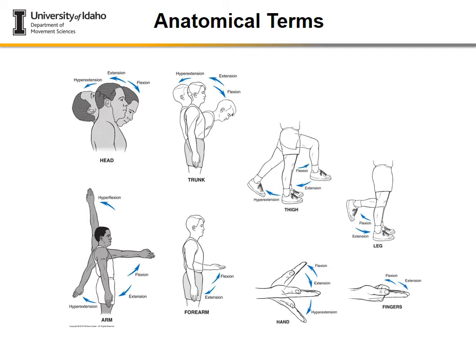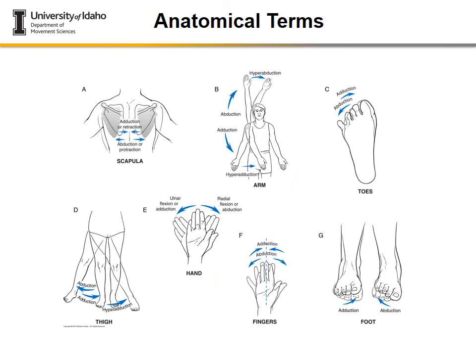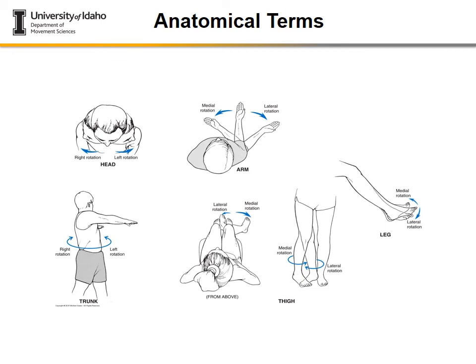Key terminology to focus on includes flexion and extension of different body parts, which occur in the sagittal plane of motion. Looking at these examples, you can see what flexion and extension look like for the head, arm, forearm, and trunk. Adduction and abduction are key motions that occur in the frontal plane. Adduction refers to motion bringing the structure toward the midline, whereas abduction brings the segment away from the midline.